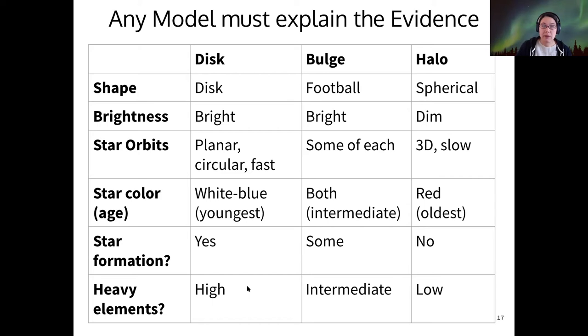And then when we talked about heavy elements, the disk contains the highest fraction of heavy elements. The halo is the lowest and the bulge, again, is intermediate between the two. So in the activity, hopefully you were able to deduce that the halo is made of old stars that are not rich in heavy elements. Those might be some of the first generation of stars in our galaxy, so the halo probably formed first. The bulge age is probably intermediate between the disk and the halo, and then the disk is our youngest feature. So how does our model explain that ranking of ages between those structures?